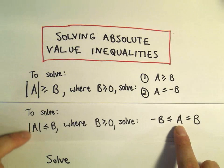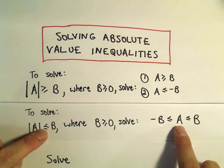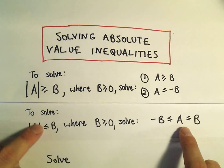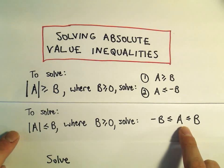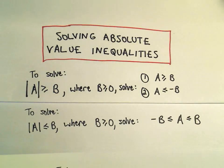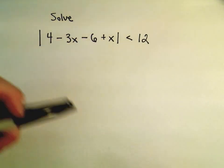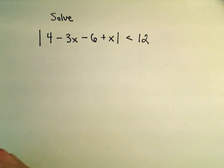Basically, we'll just remove the absolute value and sandwich this quantity a in between the positive b and the negative b. So we have the absolute value in this case of 4 minus 3x minus 6 plus x less than 12.